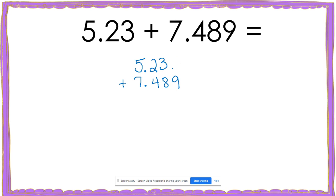Now, I noticed that in this space, I don't have a number to add to nine, but I can always add a zero because that does not change the value of 5.23. Now that I have my decimals lined up and I have a placeholder in every place, I can add my numbers.